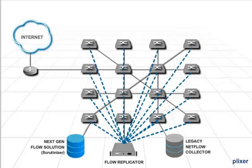By allowing a flow replicator to intercept flows before they arrive at the collectors, it can duplicate the same flow multiple times and send them off to several collectors.